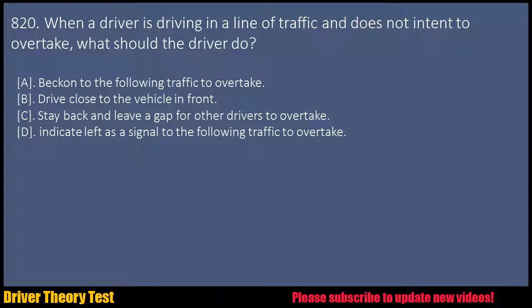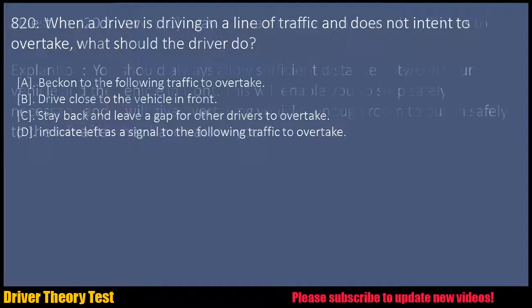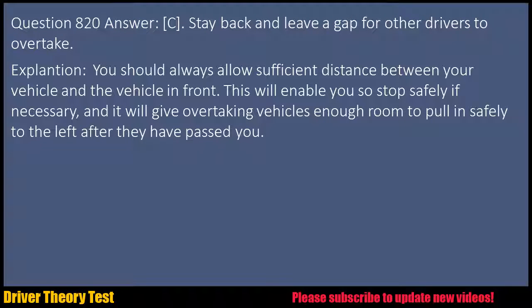Question 310: When a driver is driving in a line of traffic and does not intend to overtake, what should the driver do? a. Beckon to the following traffic to overtake. b. Drive close to the vehicle in front. c. Stay back and leave a gap for other drivers to overtake. d. Indicate left as a signal to the following traffic to overtake. Question 310 Answer: C. Stay back and leave a gap for other drivers to overtake.